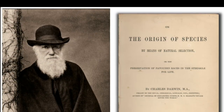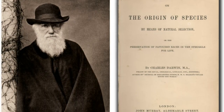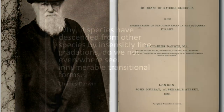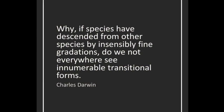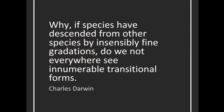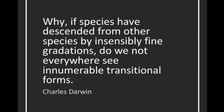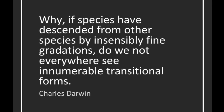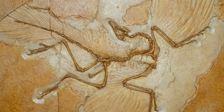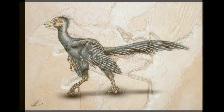When Darwin published his seminal work on the origin of species in 1859, he lamented the lack of any known transitional fossils, but he predicted they had to exist if evolution is true. Sure enough, two years later the first transitional fossil was discovered.